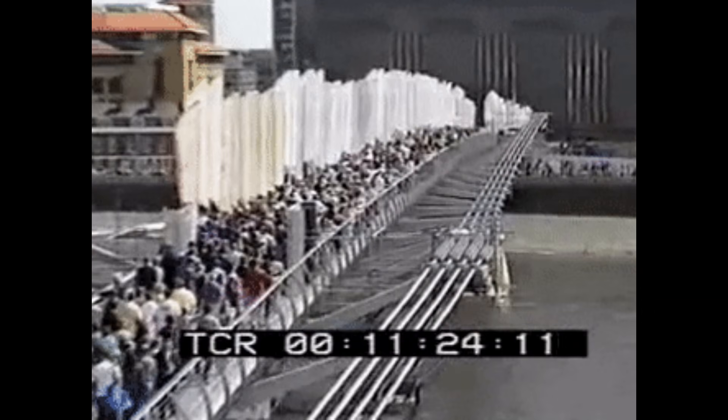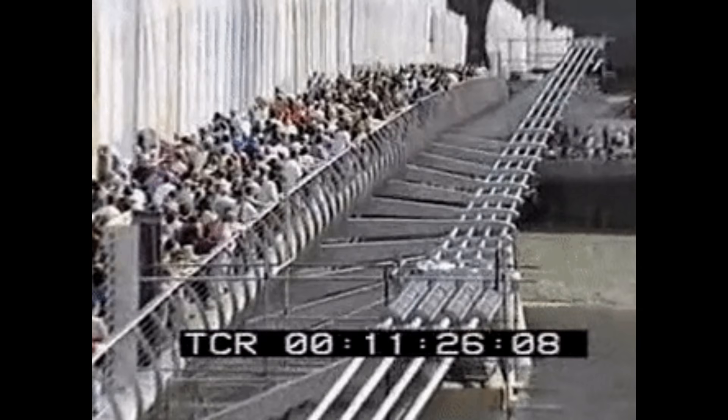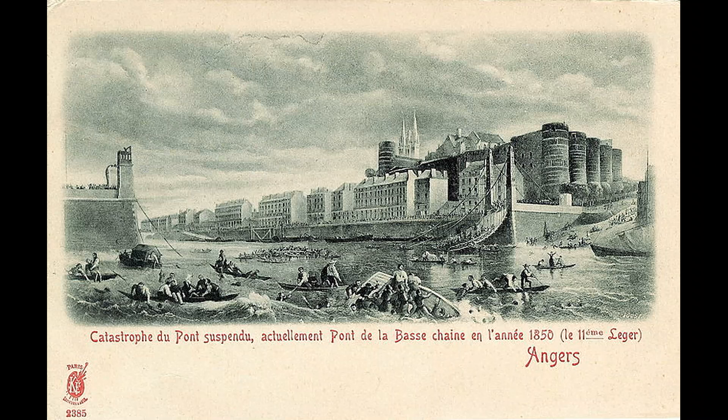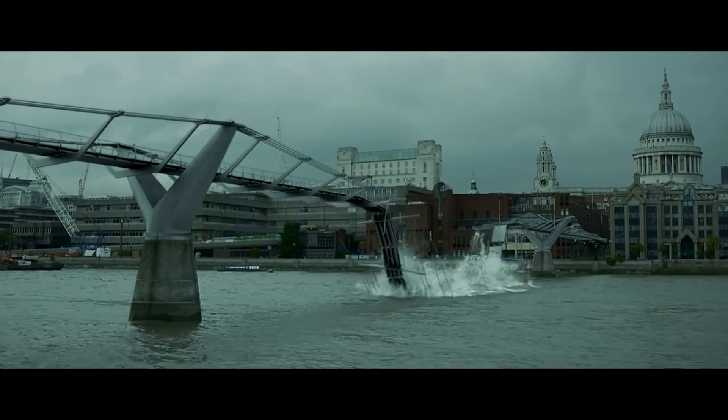We all have heard about the Tacoma Bridge, which collapsed in November 1940, and the Wobbly Millennium Bridge in London, where in June 2000 the bridge began to wobble so violently. Besides the Onge Bridge catastrophe in 1850, and some other disasters which are caused by a common phenomenon, which is resonance.